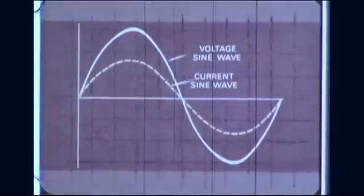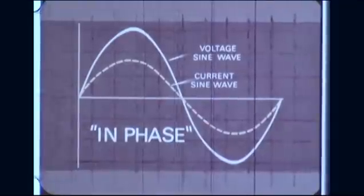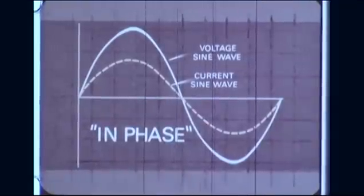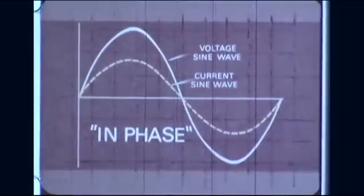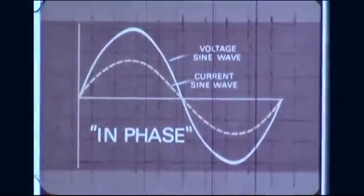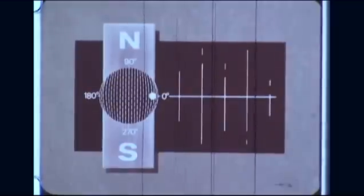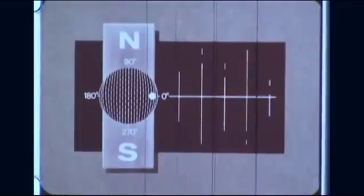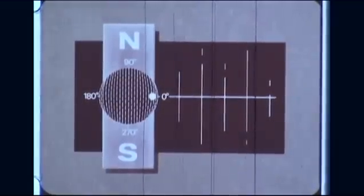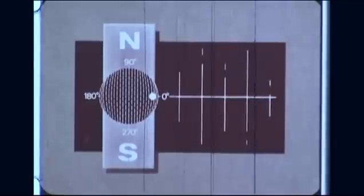However, since the voltage and current sine waves are in phase in simple resistive circuits, such as with an electric light — that is, they pass through their zero points at the same time — we will plot only the voltage wave to illustrate the flow of alternating current. Now let's see how the sine wave relates to the movement of the coil in the magnetic field by looking at a cross section of one conductor.